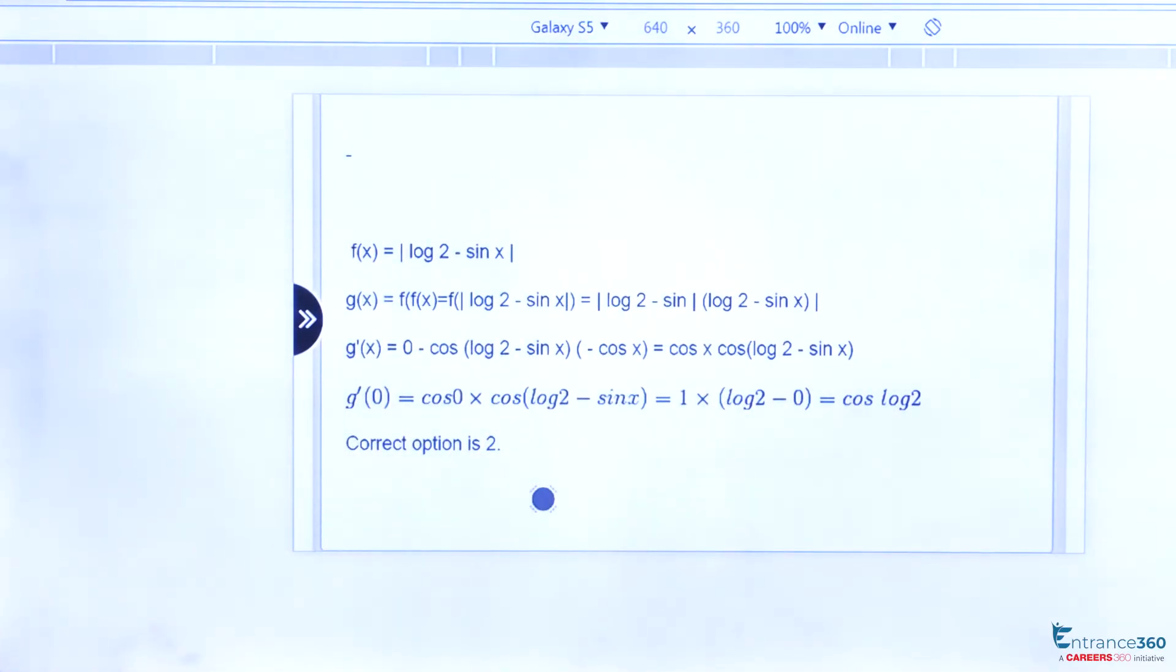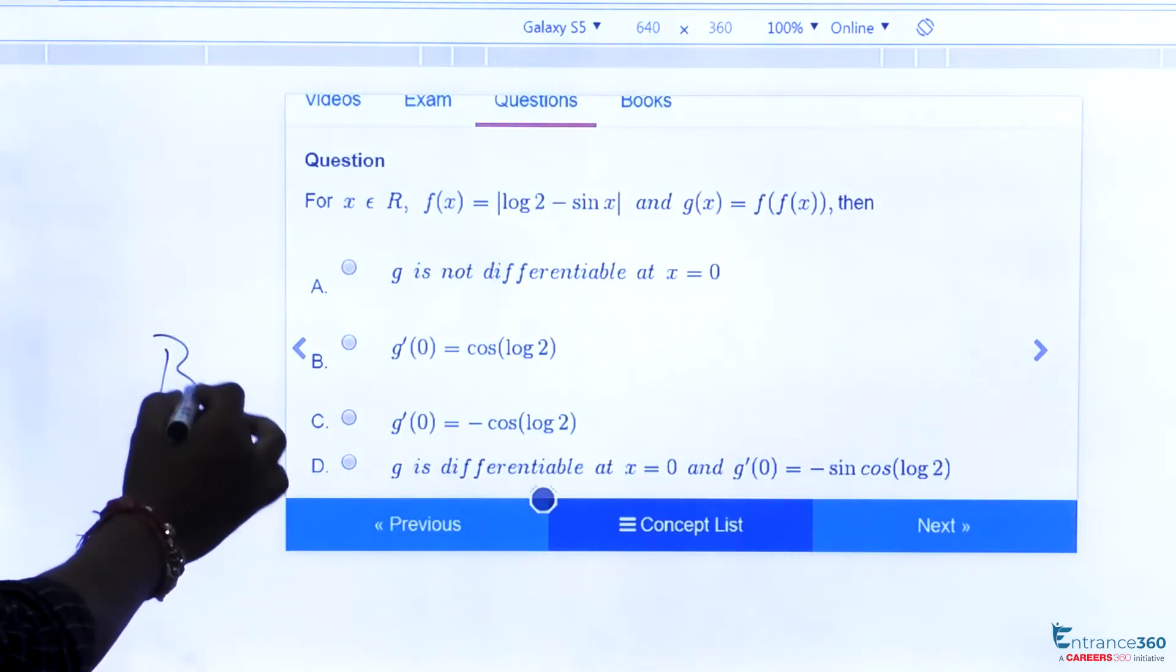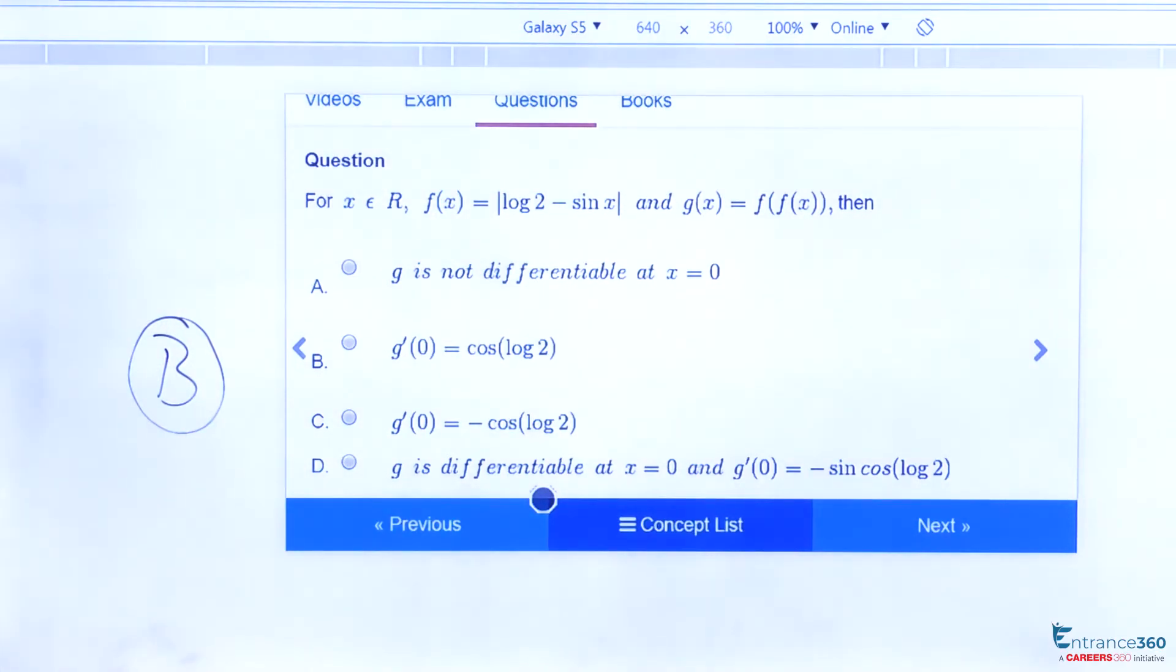So coming back to our question, cos of log 2. So the correct option is D.